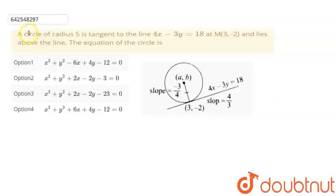Welcome to Doubtnet, so this is the question. A circle of radius 5 is tangent to the line 4x minus 3y is equal to 18, at m point 3 comma minus 2.